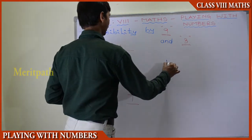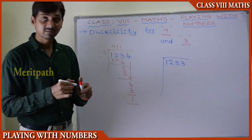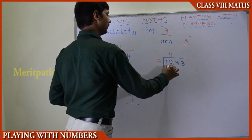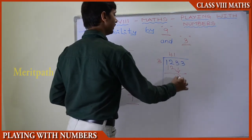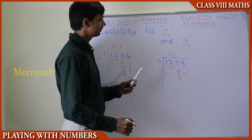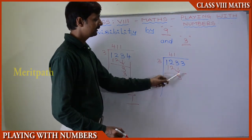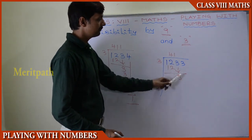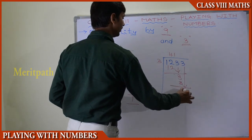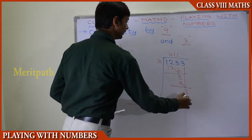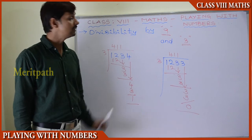Let us take another number: 1,233. Dividing by 3 — 3 goes 4 times into 12 giving 12, remainder 0. Bring down 3; 3 goes 1 time giving 3, remainder 0. Bring down 3; 3 goes 1 time giving 3, remainder 0. So we got remainder 0, meaning 1,233 is divisible by 3.